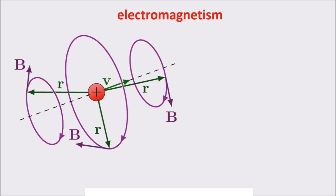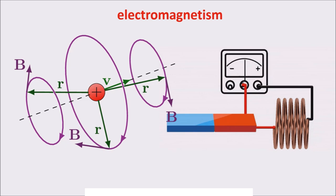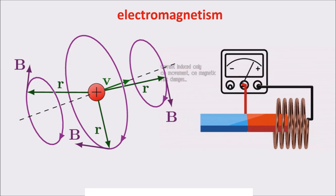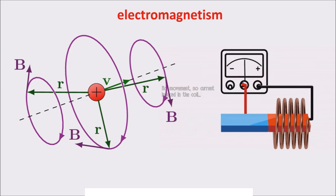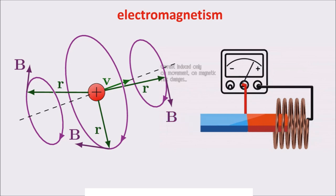Note that a moving charge generates a magnetic field, and a moving magnetic field generates an electromotive force — so an electric field — because an EMF in an inductor is simply a voltage. This explains the inner link between electric and magnetic fields, which are considered the same phenomenon, called electromagnetism.